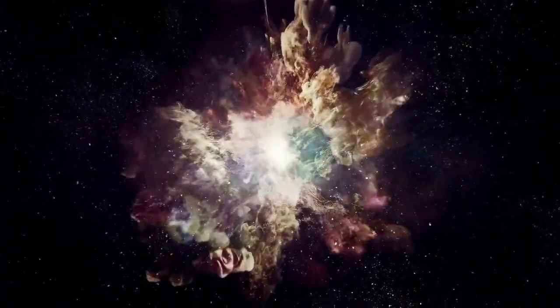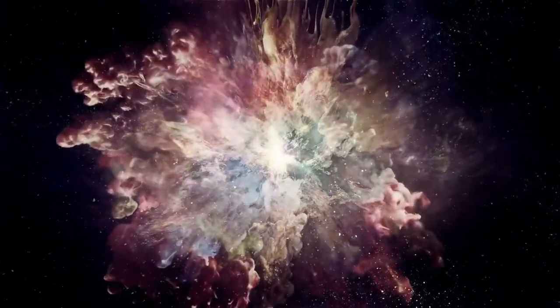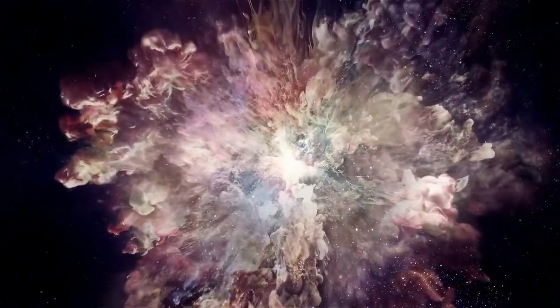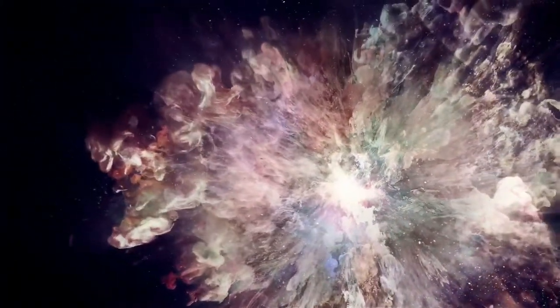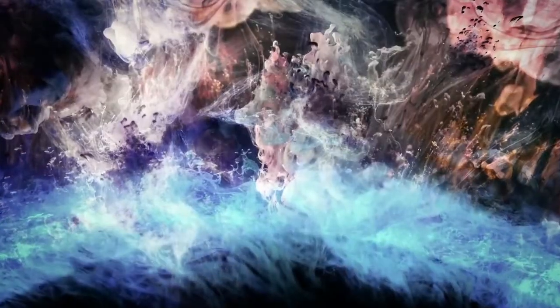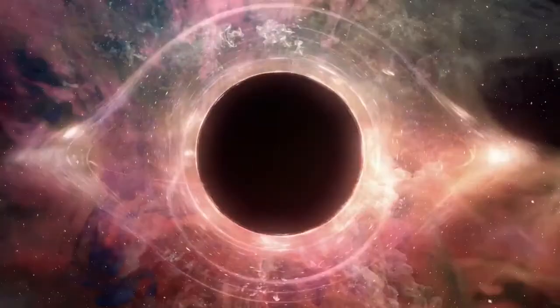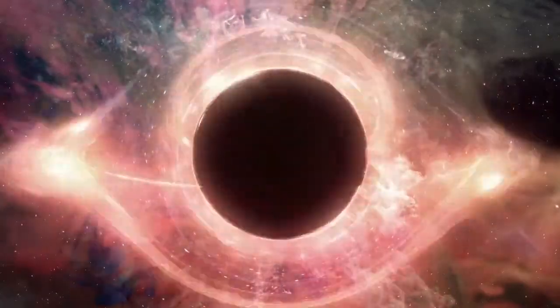Left behind where the core once stood, a neutron star will have taken its place. If the star was massive enough, instead of a neutron star, a void will be left behind, a tear in space and time, also known as a black hole.